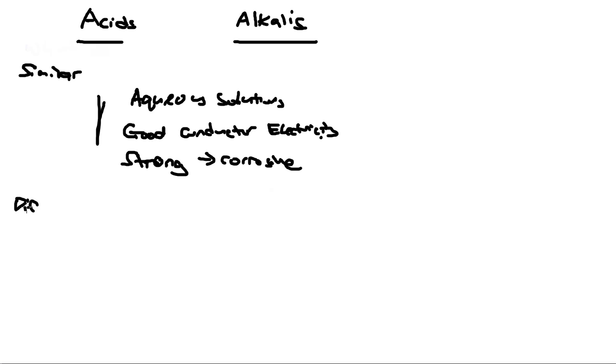So what about the differences? Some of the differences for us to tell an acid and an alkaline apart: one is taste. Acids typically taste sour, whereas alkalines taste bitter.